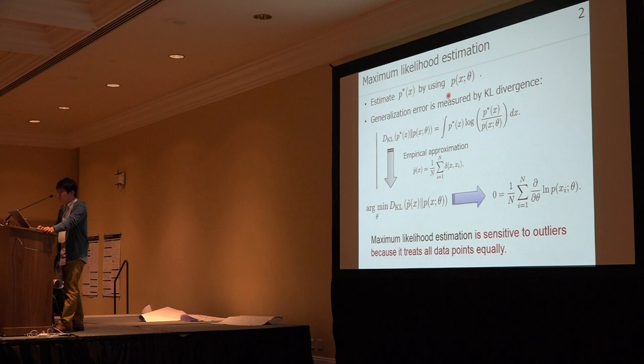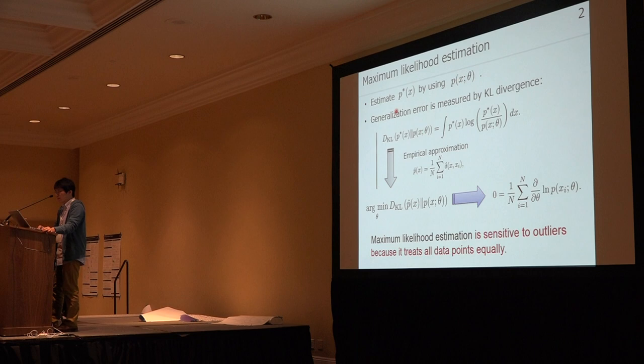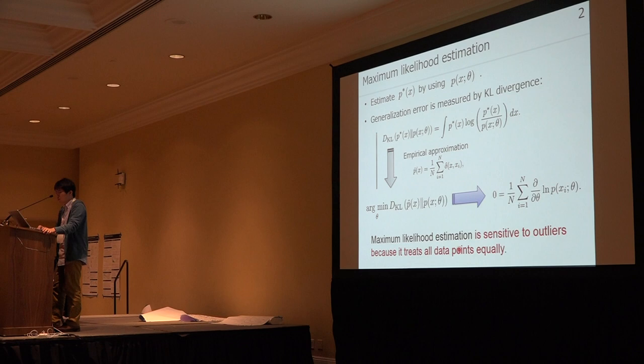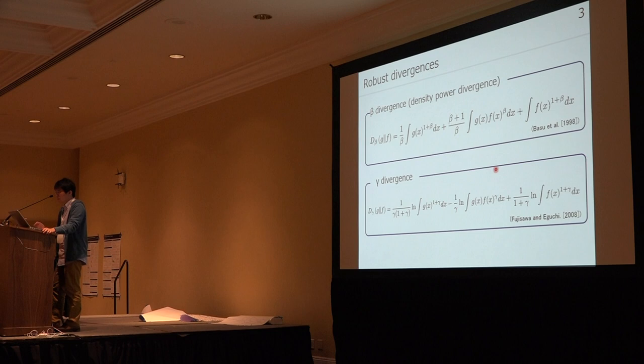To estimate the unknown distribution, the simplest method is maximum likelihood estimation. We consider the parametric model p(x; zeta), and we measure the generalization error by KL divergence from d-star(x) to p(x; zeta). Since d-star(x) is unknown, we approximate it by the empirical distribution, and by minimizing the KL divergence with respect to zeta, we obtain this estimator.